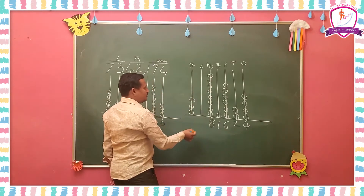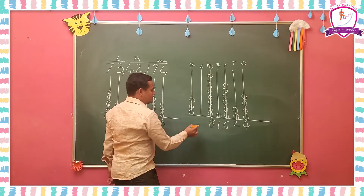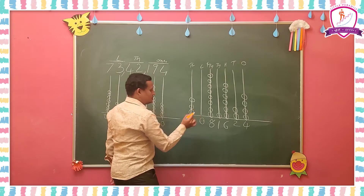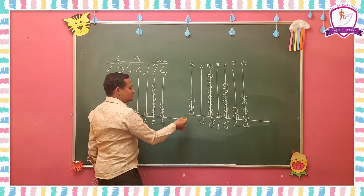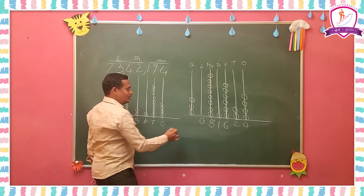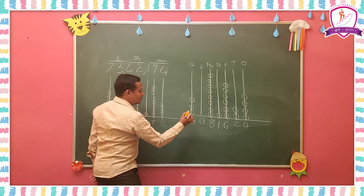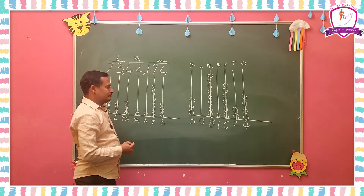In the lakhs place there are no bits, so you have to write 0 there. And in the 10 lakhs place, 1, 2, 3 — there are 3 bits. You have to write 3 in the 10 lakhs place.